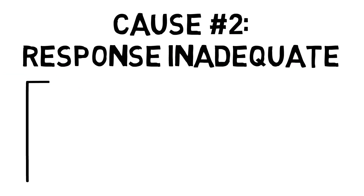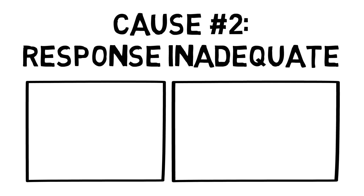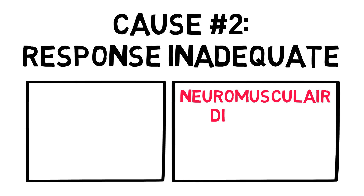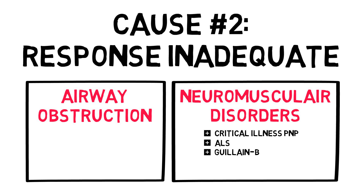In order to physically breathe, we need to have functioning respiratory muscles and an open airway. It then follows that neuromuscular causes and airway obstruction can cause respiratory acidosis. Examples of neuromuscular disorders that prevent adequate ventilation are critical illness polyneuropathy, ALS, Guillain-Barré, etc.